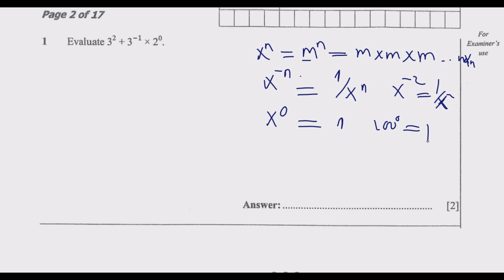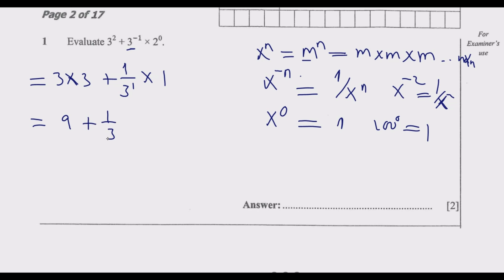Now let me simplify this question. 3 to the power 2 means 3 multiplied by 3. Then 3 to the power negative 1 is the same as 1 over 3 to the power 1, because the power is negative. Then multiplied by 2 to the power 0, which equals 1. Expanding: 3 times 3 is 9, plus 1 over 3 — because anything to the power 1 is itself — times 1.